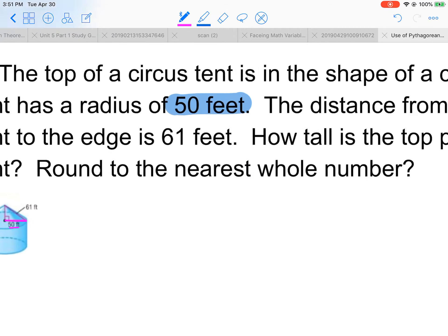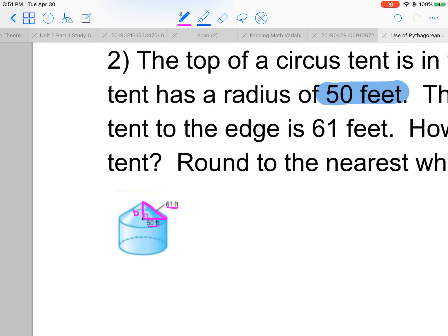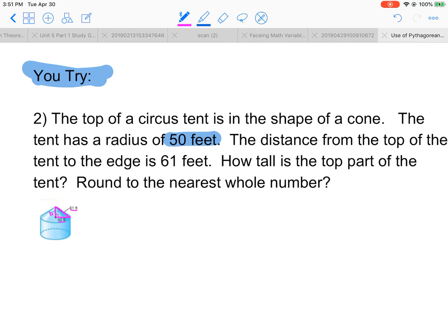The distance from the tent to the edge is 61 feet. So from the tent to the edge, 61, that's your hypotenuse. The other part of the triangle you're missing is one of the legs. How tall is the top part of the tent? Round to the nearest whole number.